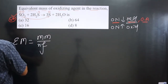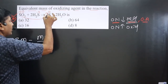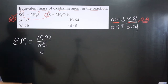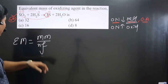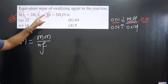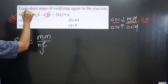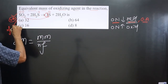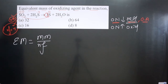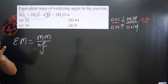The n-factor is the difference in oxidation numbers. For sulfur in SO₂, the oxidation number is +4 on the reactant side, and sulfur is present in 0 oxidation number on the product side. The difference is 4 − 0 = 4. Therefore, the n-factor value for SO₂ in this reaction is 4.